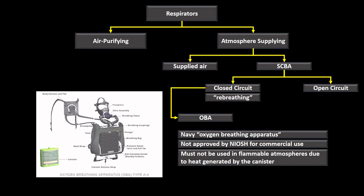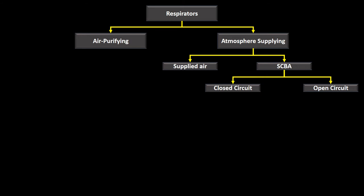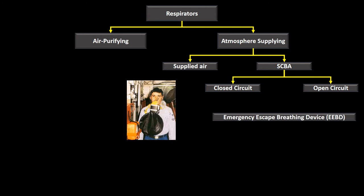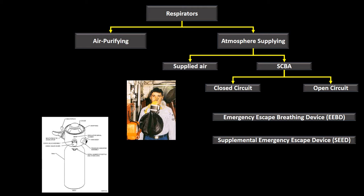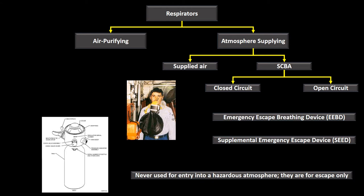Closed-circuit SCBAs tend to last longer because some exhaled air is rebreathed. Open-circuit SCBAs only use the air brought in, so they don't last as long. Two special SCBA types are the EEBD (Emergency Escape Breathing Device) and the supplemental emergency escape device (SEED). These are for escape only — never for entering hazardous atmospheres, rescue, or firefighting. They are designed solely for egress with a very short air supply.